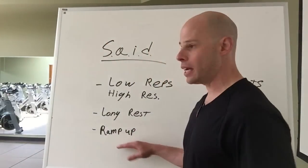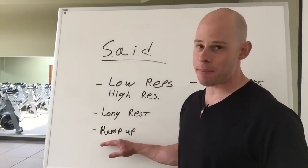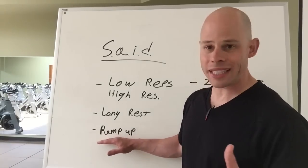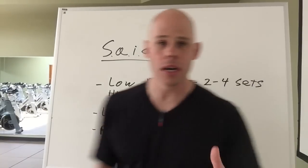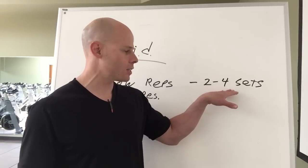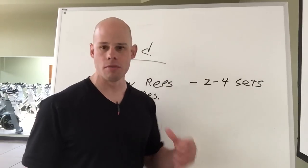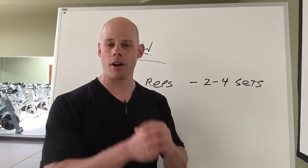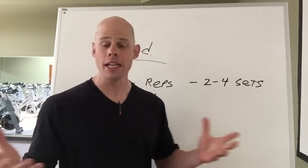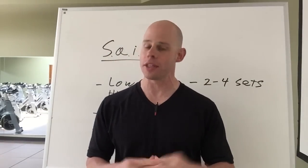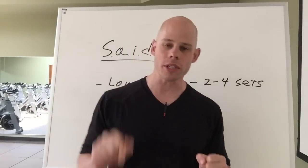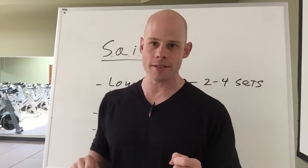Then you have your working sets — usually about two to four sets. Play it by ear: some days you'll need more of a ramp-up if you're tired or cold, so let the ramp-up be more gradual, then do two or three working sets. But really give everything you've got on each rep. That's the basic idea of training for strength. In the next video, we'll be discussing training for endurance. Questions below — be fit, live free.